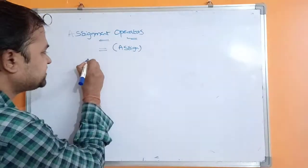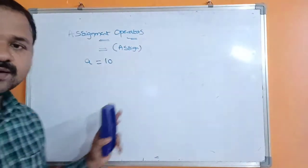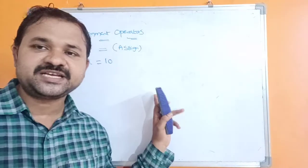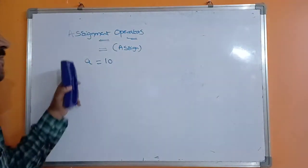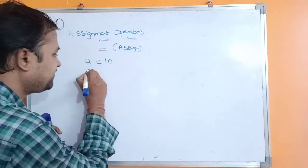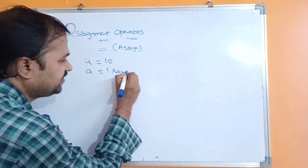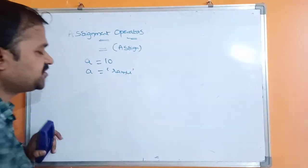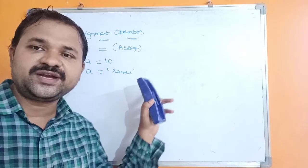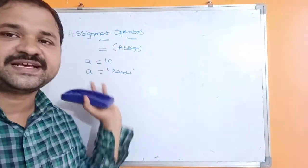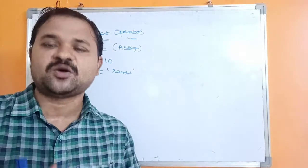For example, if we have a statement like a = 10, then whenever that statement is executed, the value 10 will be assigned to a. Similarly, if we have a = 'ramu', then whenever the statement is executed, the string 'ramu' will be assigned to a. That is the use of the equal to operator.